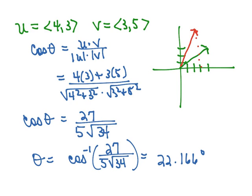And so this is our vector v. And we're trying to find theta, which is the angle between those two vectors. And so it looks very reasonable that our answer could be 22 degrees.